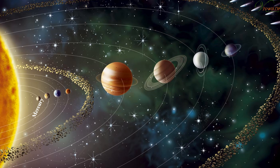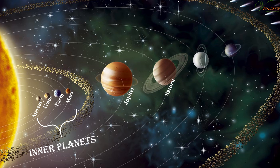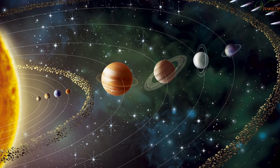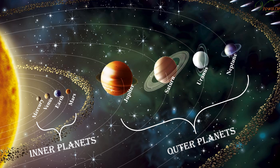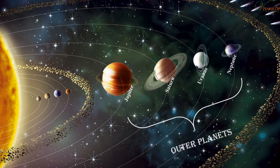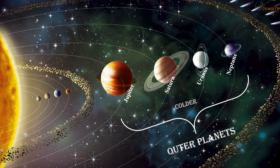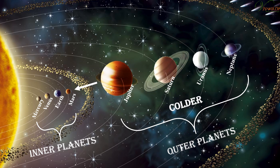Mercury, Venus, Earth, and Mars are called the inner planets. Jupiter, Saturn, Uranus, and Neptune are called the outer planets. The outer planets have several moons and a system of rings. The inner planets are smaller and denser than the outer planets. The outer planets are colder than the inner planets as they are farther away from the Sun.